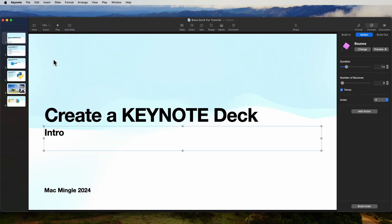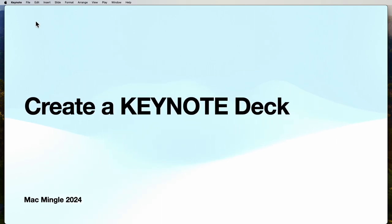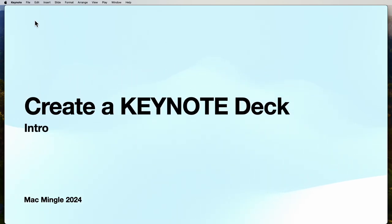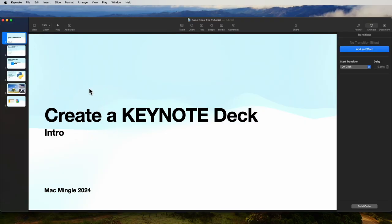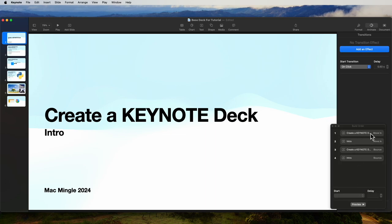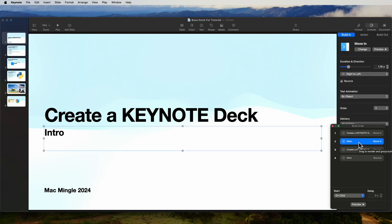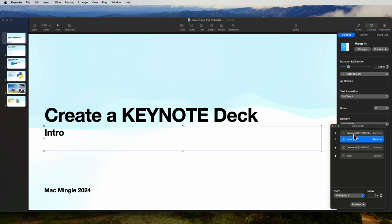Now when we play this slide — on click, it comes in and stops, waits for a click, the second one comes in, then the bounce, and then another bounce. That's not what we want. So now that we've got these set up, let's select the build order. The first thing that happens is 'Create Keynote' moves in. The second thing is 'Intro' moves in — and it says it moves on a click. Let's say we want it to move with build one, so when 'Create Keynote' comes in, the second one comes in at the same time.